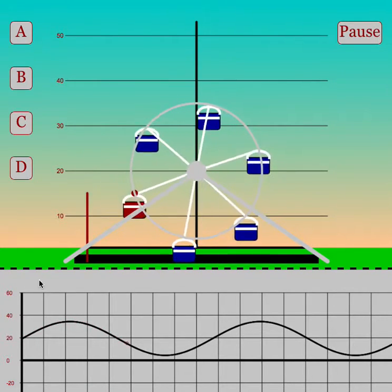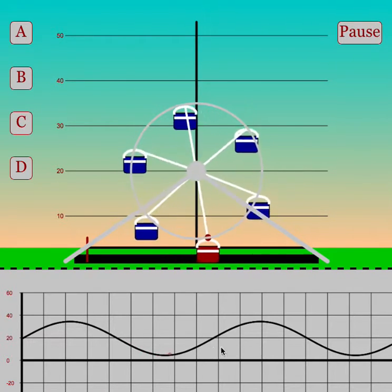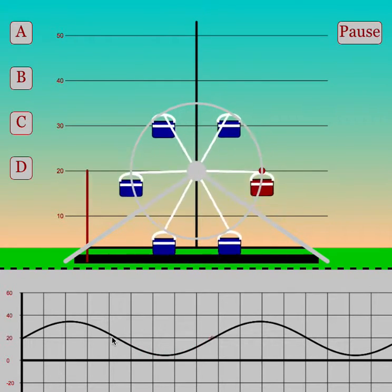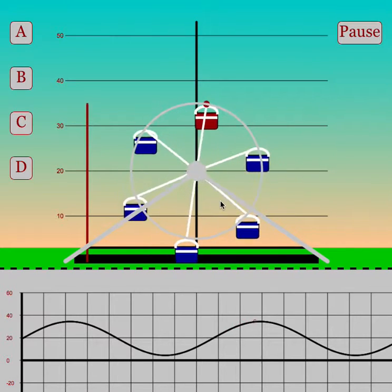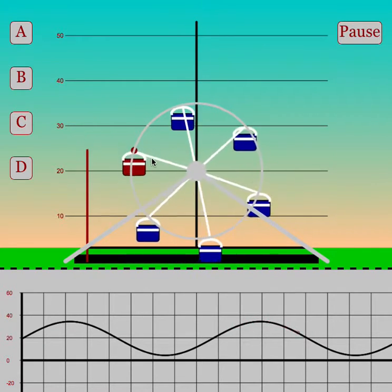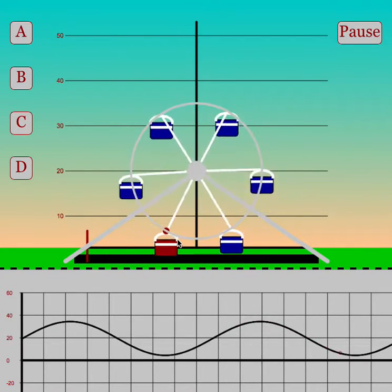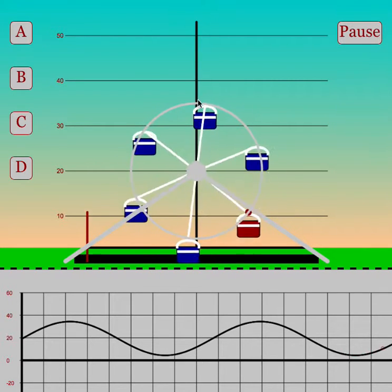The speed of the Ferris wheel determines how stretched out or how compressed the sine curve is going to be. Students should easily be able to see that the higher the B value, the more rapidly they go up and down.